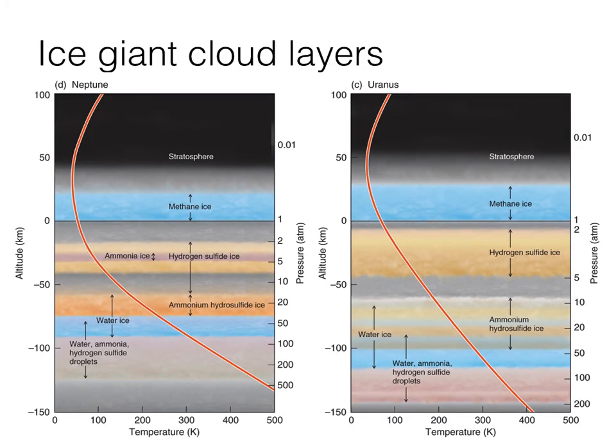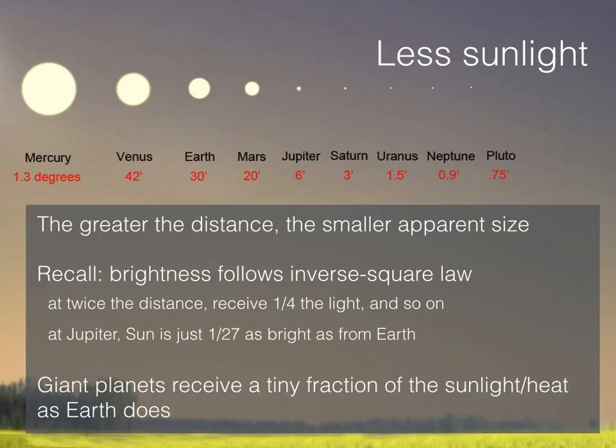Neptune and Uranus are again very similar. Uranus is slightly less massive than Neptune, therefore its cloud layers are a little bit broader. One of the things that's really interesting about these planets is that they have all of this weather — or at least three of them do; Uranus not so much, but even Uranus has a little bit. They all have these dramatic storms and so forth, and yet they are extremely far from the sun.